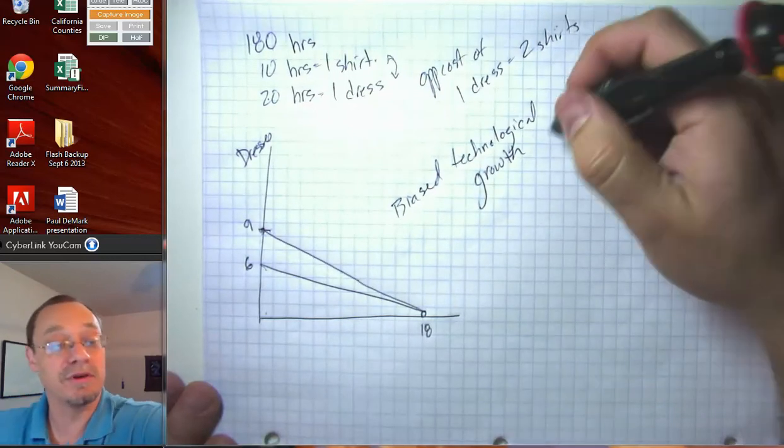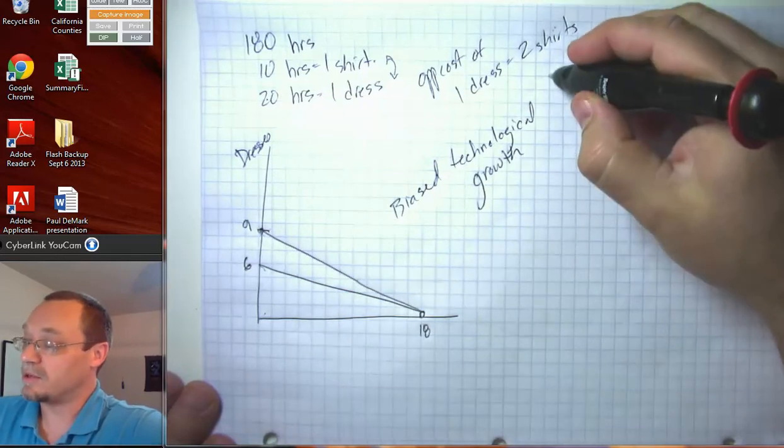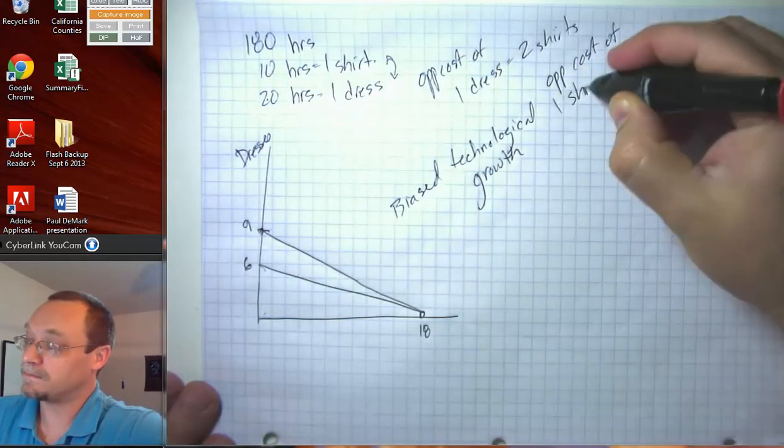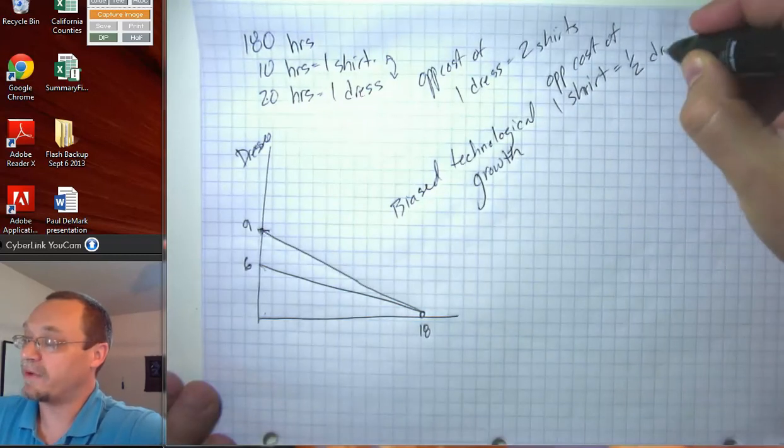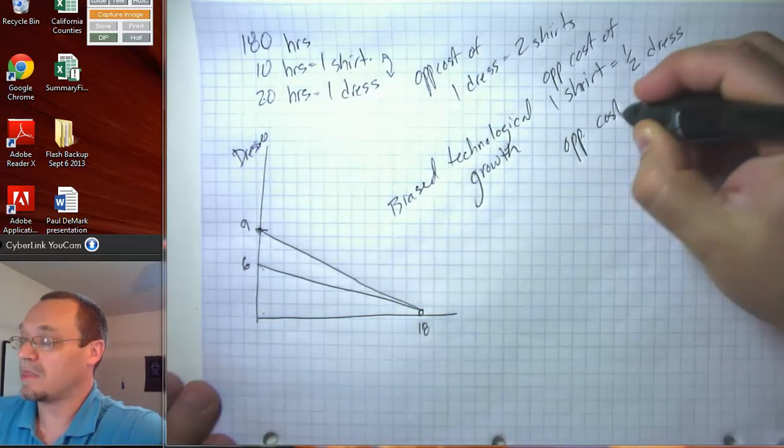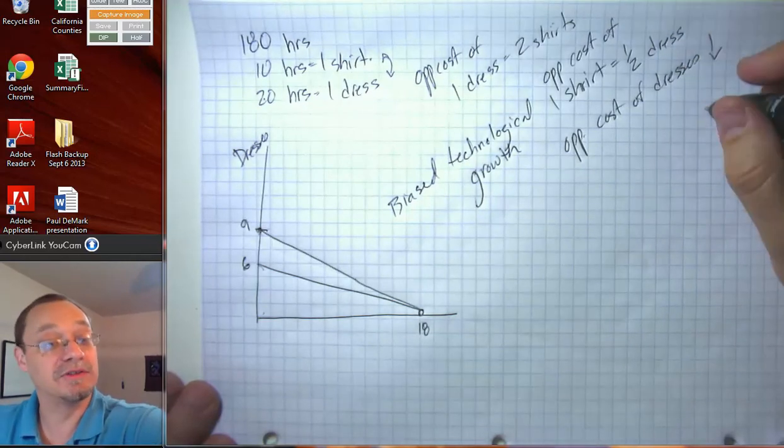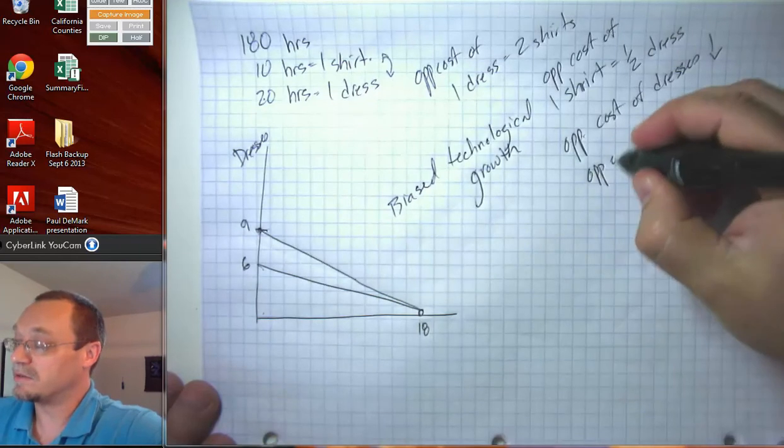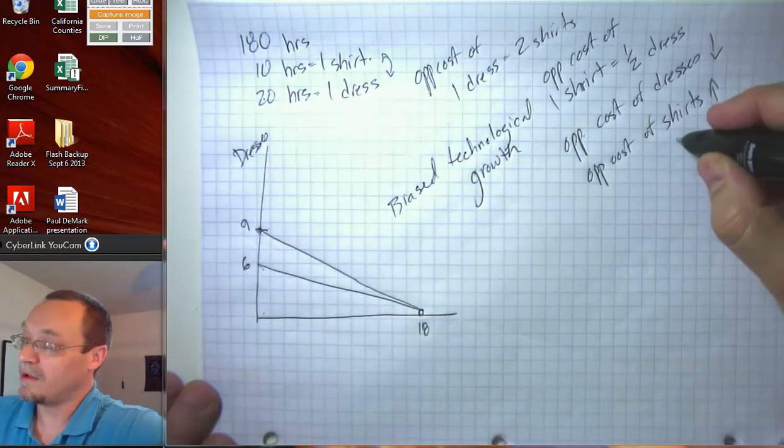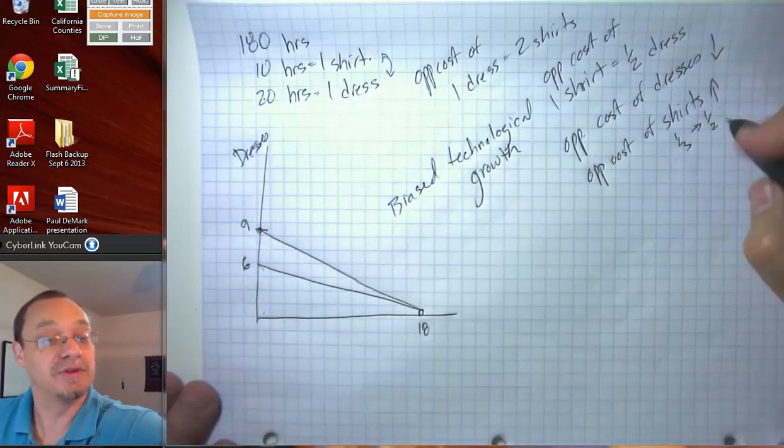So, the opportunity cost of one dress has fallen. We could equivalently say the opportunity cost of one shirt is now one half of a dress. So, the opportunity cost of dresses has gone down from three to two. The opportunity cost of shirts has gone up from one third to one half. One half is greater than one third. It's a little tricky sometimes to compare fractions.